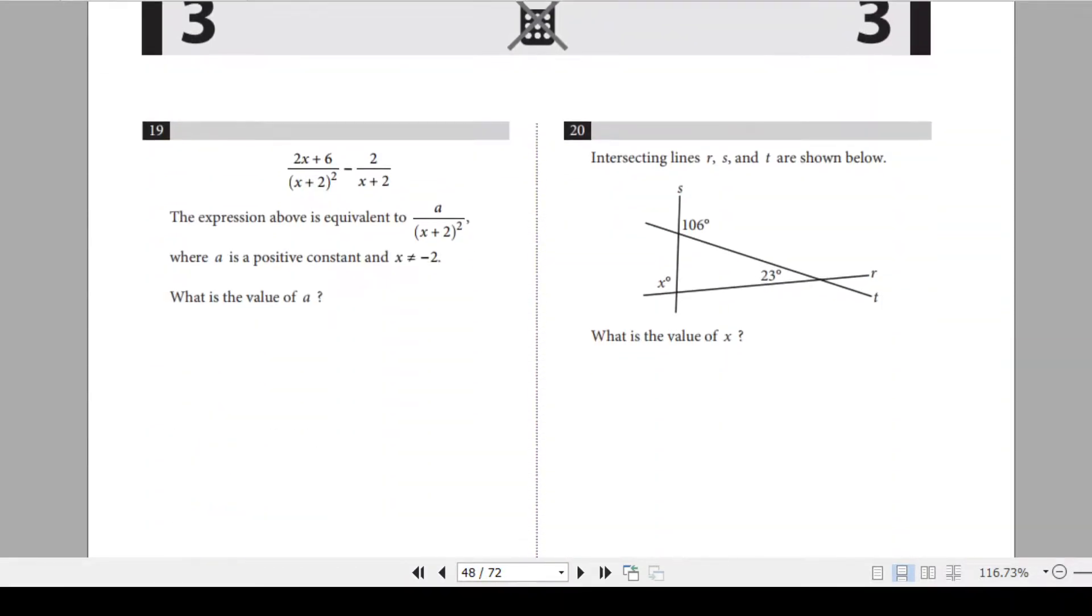Question 19. This is an expression. The expression above is equivalent to a over (x+2)² where a is a positive constant and x not equal to negative 2. What is the value of a? Alright, so let's solve this. 2x plus 6 over (x+2)² minus 2 divided by x plus 2. So because this is (x+2)², we must make it (x+2)² by multiplying x plus 2 in numerator and denominator. Now this whole thing is equal to a over (x+2)².